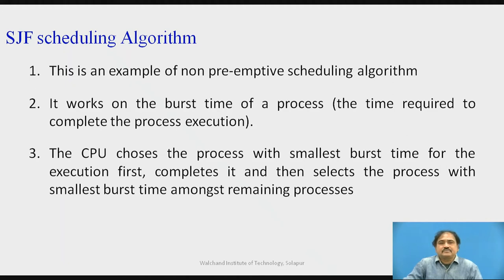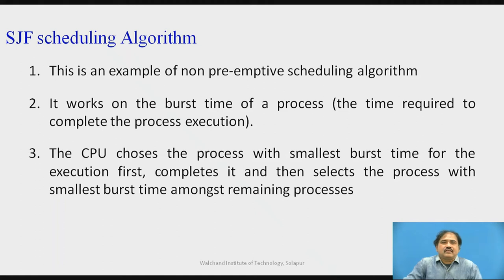In this mechanism, the CPU chooses the smallest burst time process initially and executes that process first. After this execution, it looks for the next process which is having the smallest burst time among the remaining processes in the ready queue. Ultimately, we always consider the smallest burst time first, which is why the name is Smallest Job First.